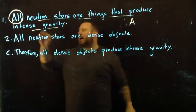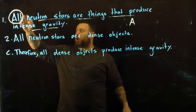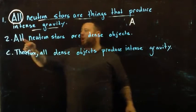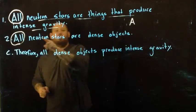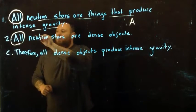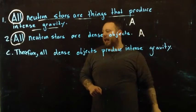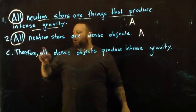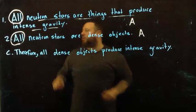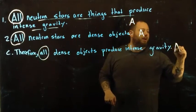Because it uses the word 'all,' we know it is a type A. Our second premise is 'all neutron stars are dense objects.' Again, we have 'all,' so we know it is also a type A. Therefore, 'all dense objects produce intense gravity' — again, we have another 'all,' and that would be a statement type of A.